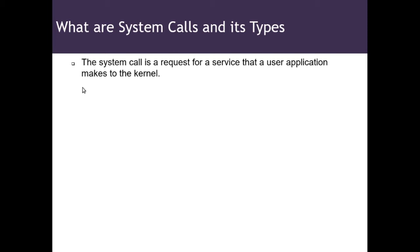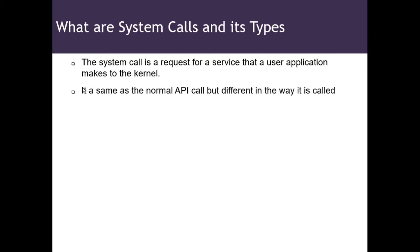The system call is a request generated from the user space, and it passes through the system call interface, which in turn calls the code for that system call residing within the kernel space. It is similar to a normal API call but different in how it is called. In a normal API the code is written within the same space — whether user space or kernel space — but with system calls, in order to enhance security, the APIs are exposed to the user space while the code is written within the kernel.